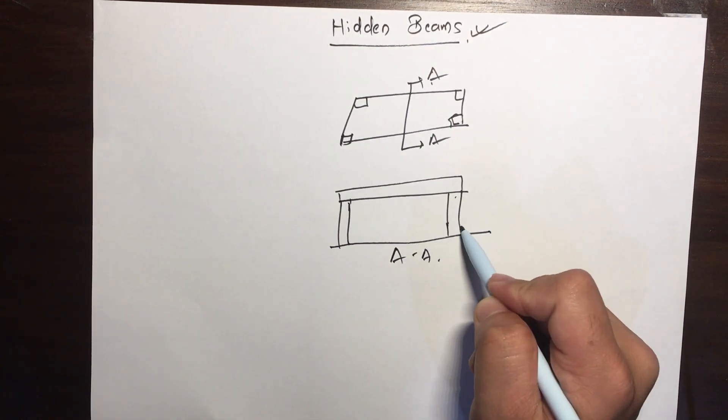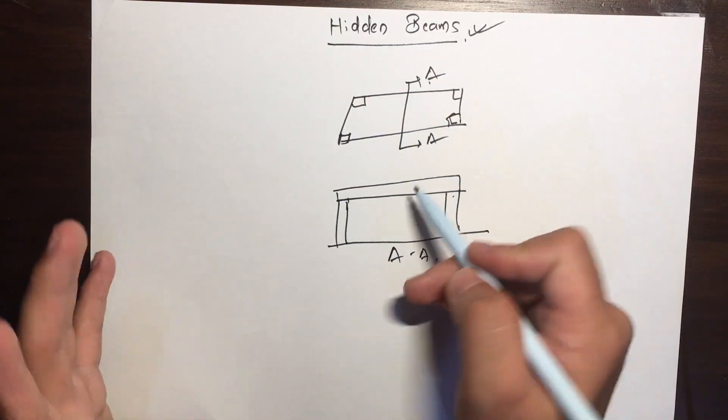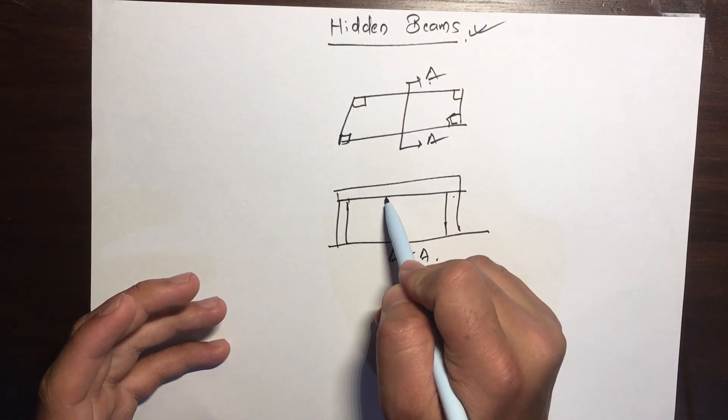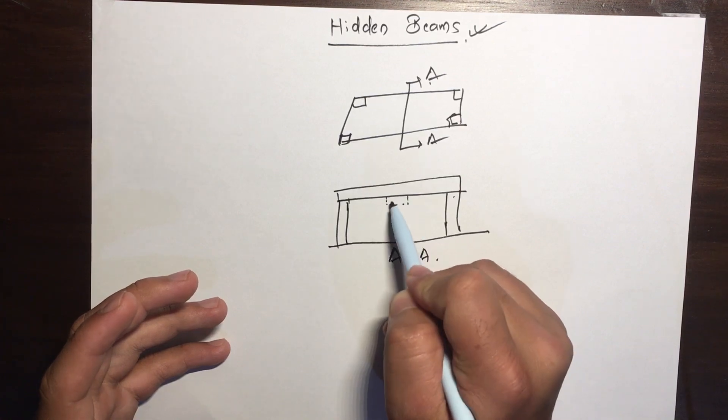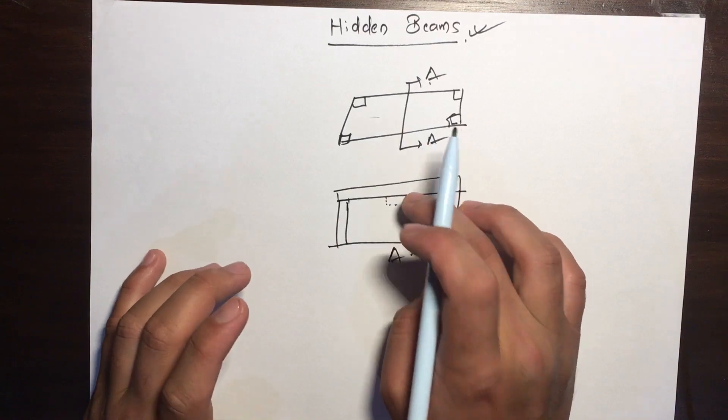This is your slab. From an architectural point of view, suppose you don't want to show your beams. If you had a regular view here, you would see the beam like this. But suppose you don't want this beam to be seen in this room, so what you do is hide this beam inside the slab.